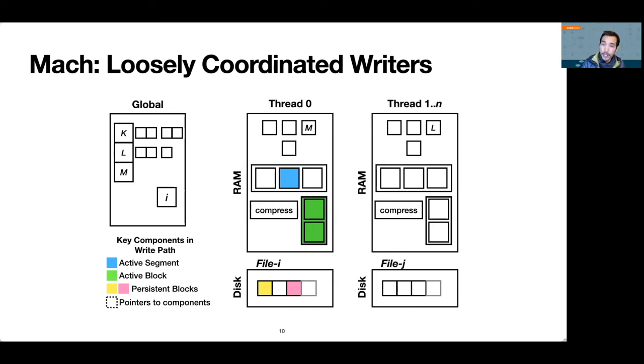When a source writes data, the writer looks up its relevant data items and pushes the write to a fixed size block of memory we call an active segment, the blue box. Being uncompressed and in memory, this serves as the first level of recent data.